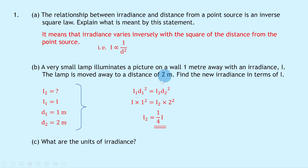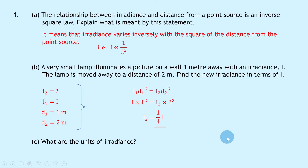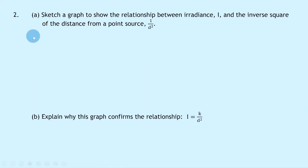The new irradiance is a quarter times the initial irradiance. That's because we've doubled the distance, which comes back to part a — our inverse square law definition: if we double the distance, we quarter the irradiance. Part c asks for the units of irradiance: the units are watts per square meter, W m⁻².